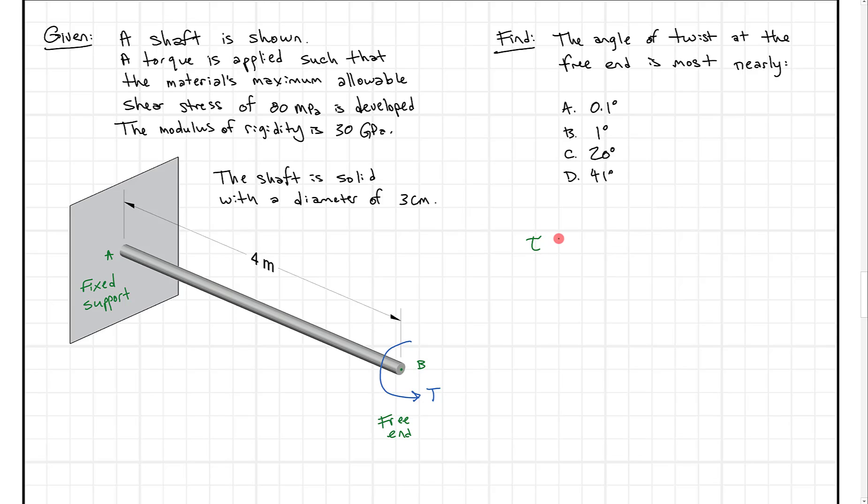One, we have to look at our equation for torsional shear stress which is TR or TC over J. And second we're going to look at our equation for twist which is going to be TL over JG. And these are different things that we're going to need to figure out but what we know here is T is the torque, R the radius, J polar moment of inertia.